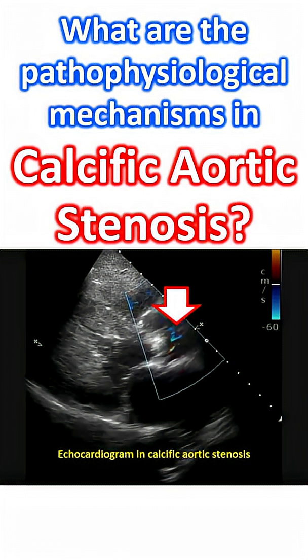chronic inflammation, deposition of lipoproteins, and induction of osteogenic signaling are important mechanisms involved in the progression of calcific aortic stenosis. These may have potential implications in the development of new therapeutic targets to prevent initiation and progression of calcific aortic stenosis.